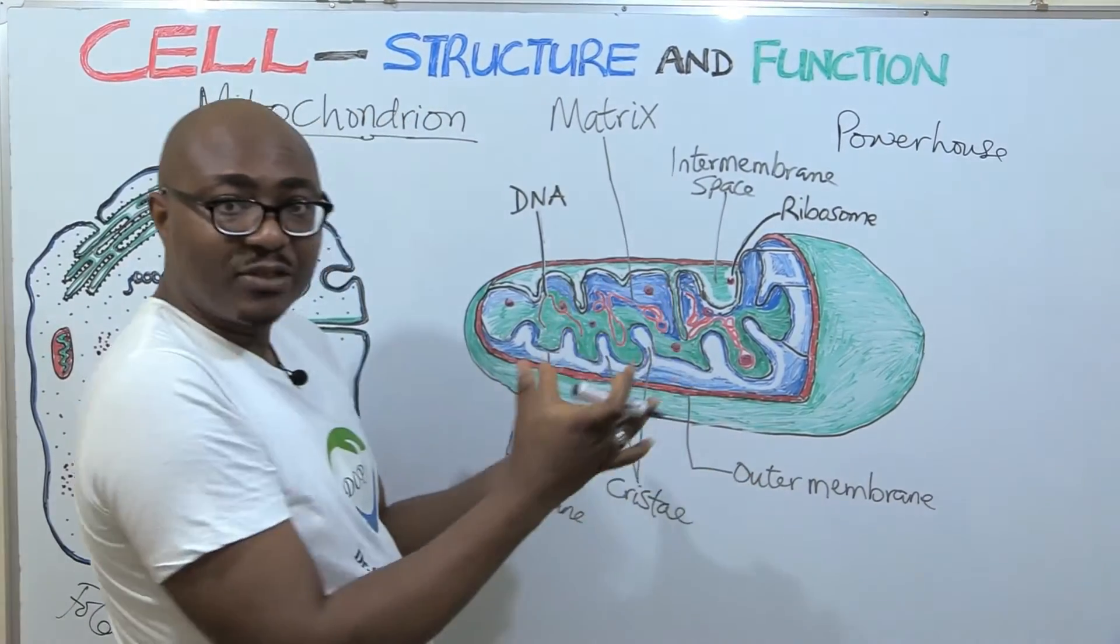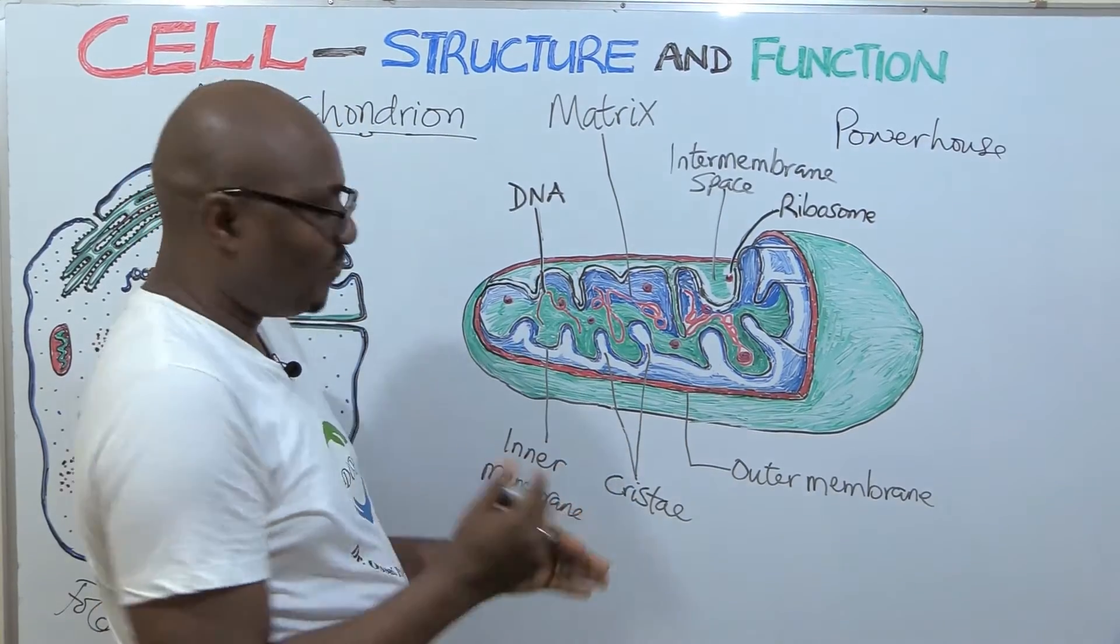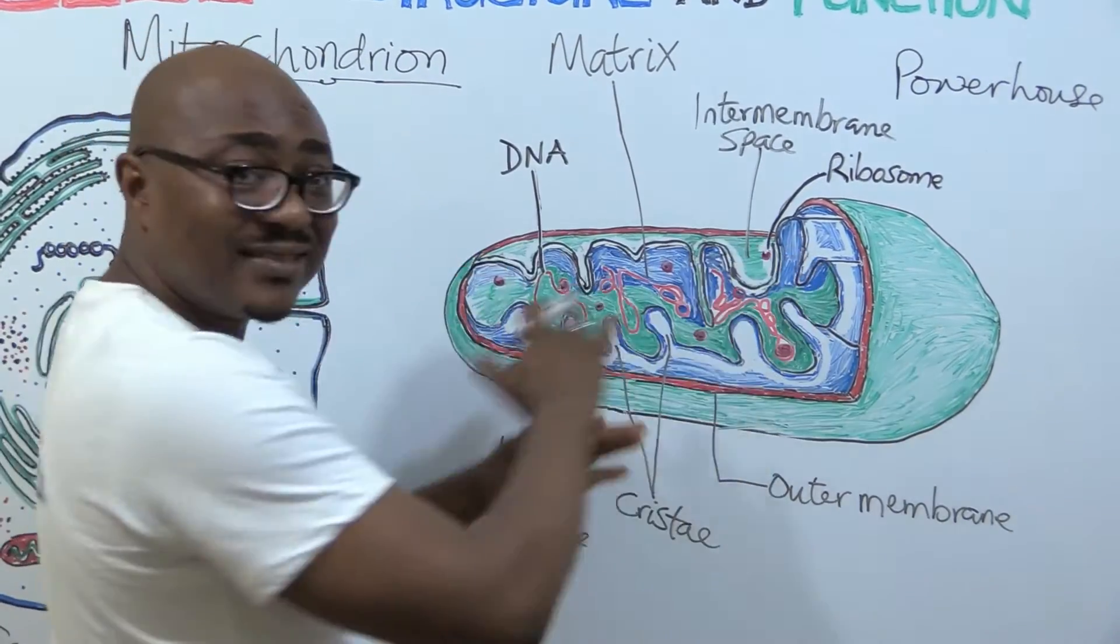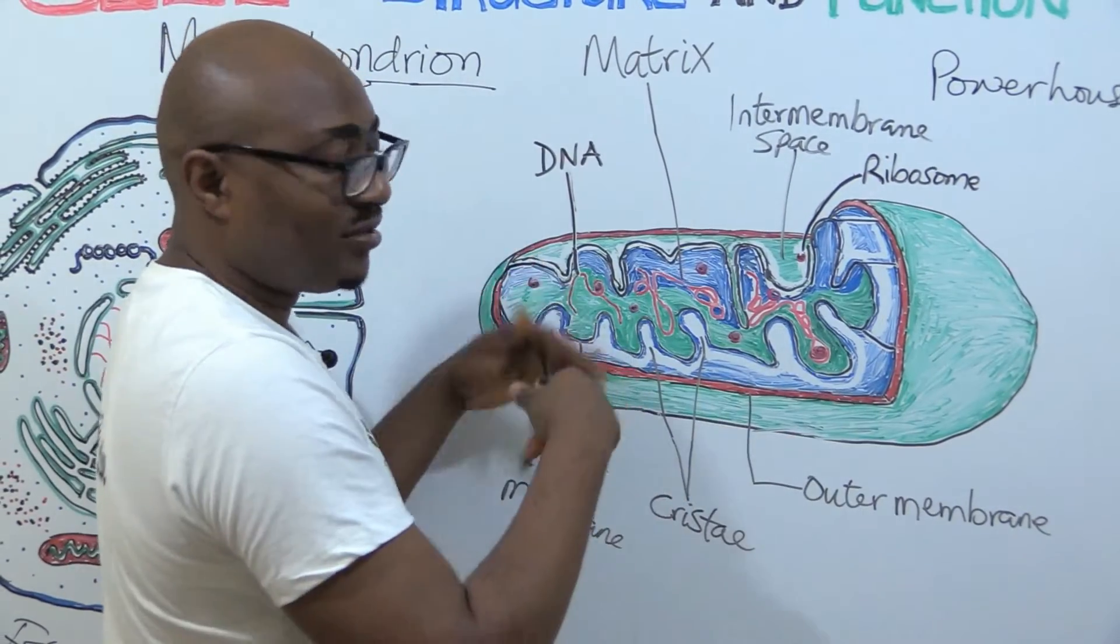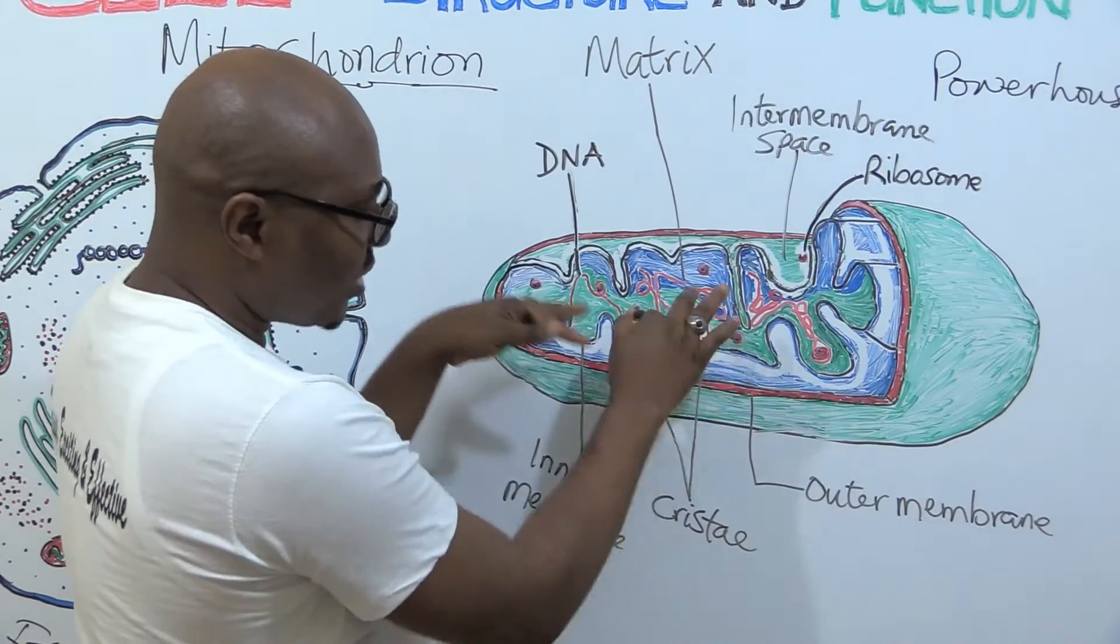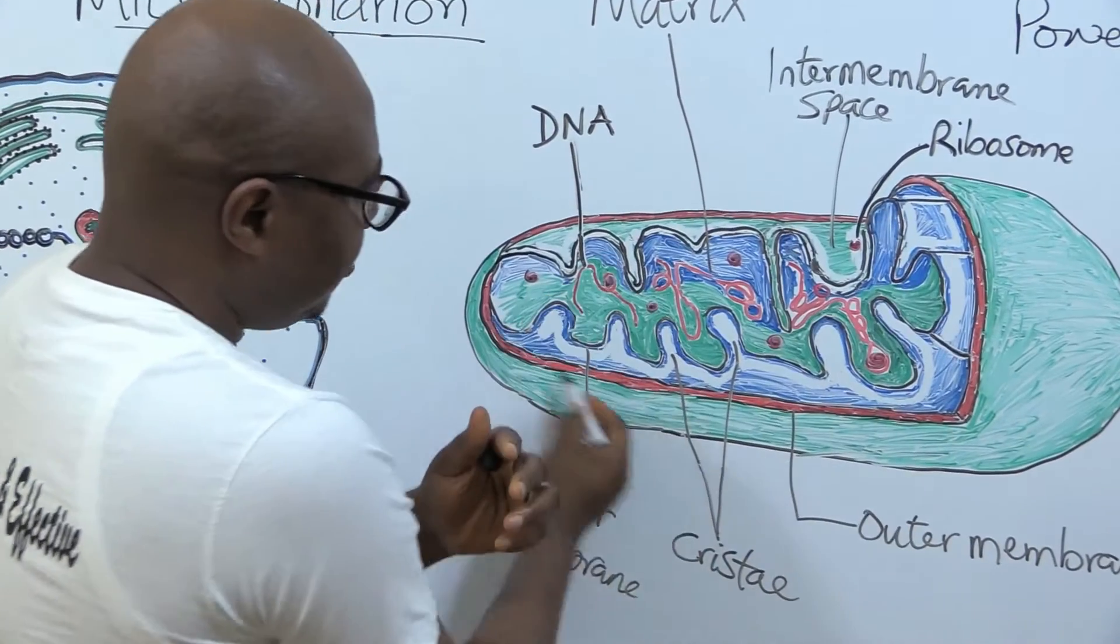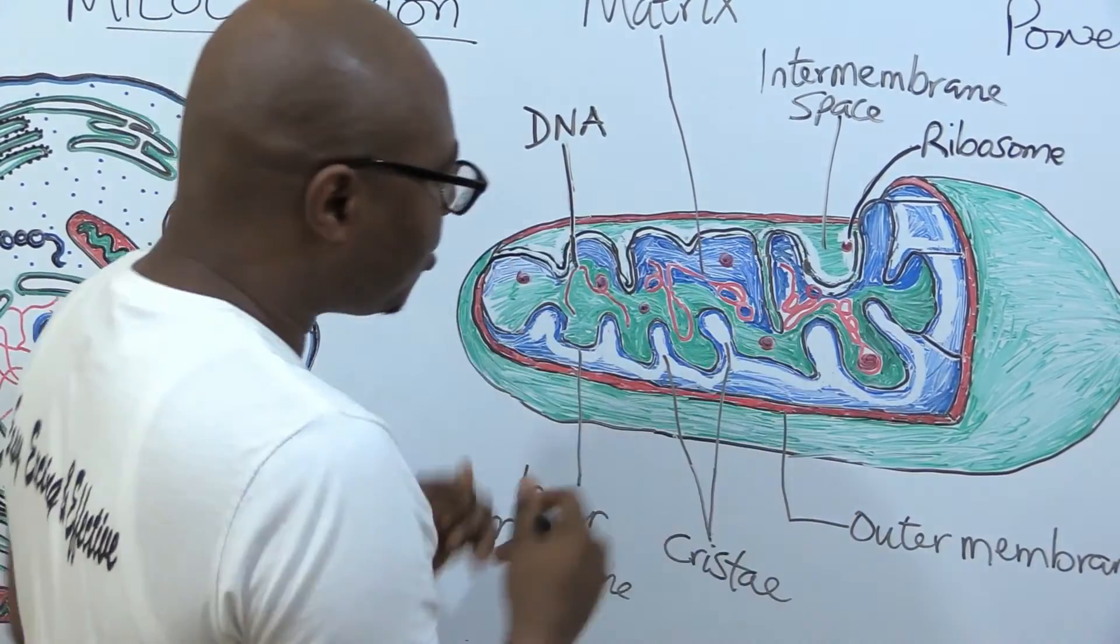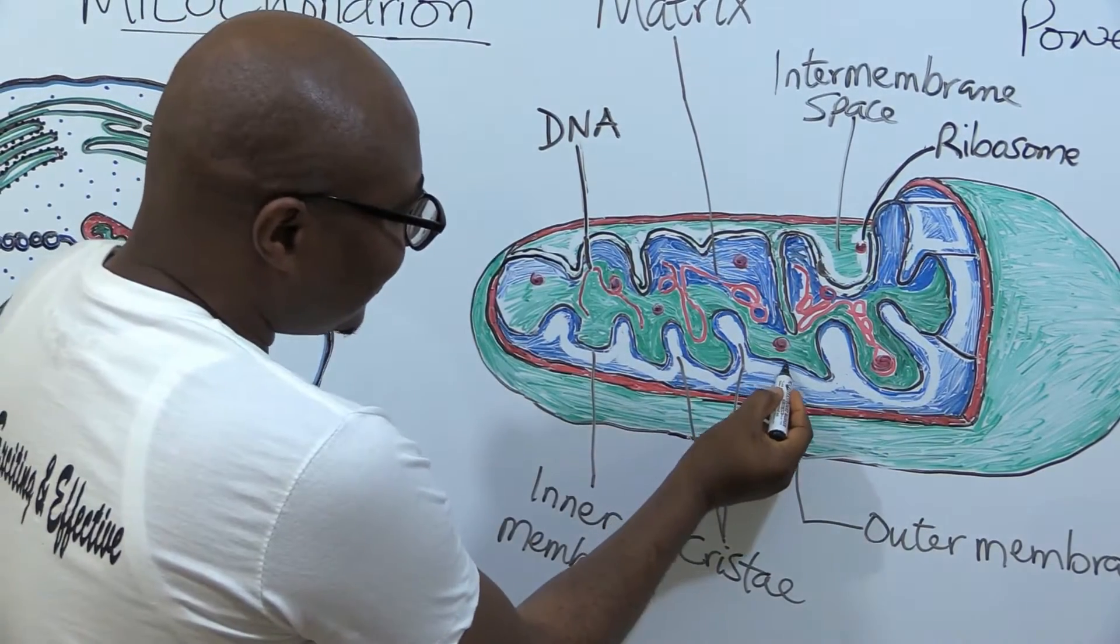Now let's look at the structure. This mitochondrion has two membranes. It has been cut open. First of all, it has a spherical shape or elongated shape - you can also say sausage shape if you like. It has been cut open so I can see inside. This one here indicated by this red is the outer membrane, the outer covering. Then it has another covering, the inner covering, that is this here.